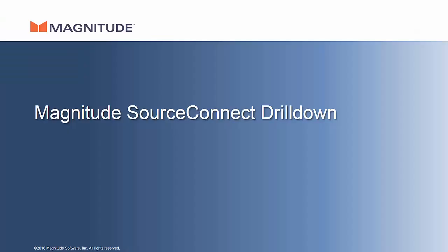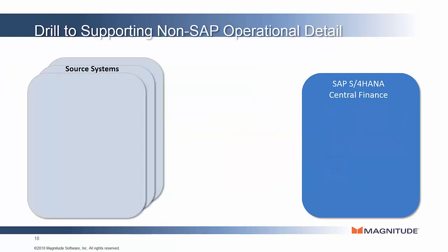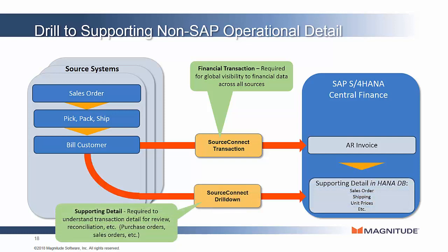The third and final module in this video is SourceConnect Drilldown. It brings a native Fiori-based experience to drilling into detail behind financial transactions that came from non-SAP source systems. There are two components to the drilldown product. First, at the same time that SourceConnect Transaction replicates the financial document into the Universal Journal, SourceConnect Drilldown replicates supporting detail behind that transaction into a HANA data store right next to the Universal Journal data.